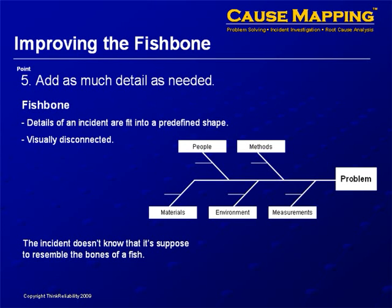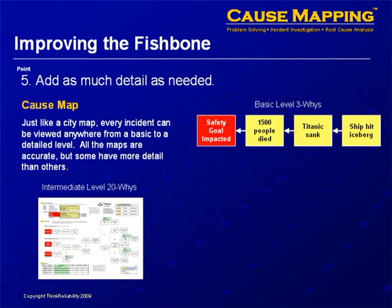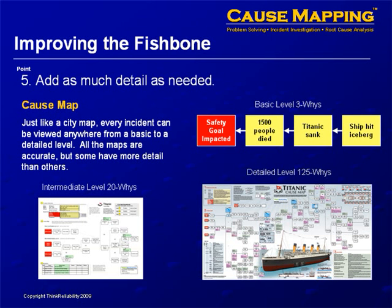The fifth item is how important it is to add detail. On the fishbone diagram, it's always this defined shape that looks like a fish. One of the advantages of laying things out visually in terms of cause and effect is that you can begin with just very basic why questions: the safety goal was impacted because 1,500 people died because the Titanic sank because the ship hit the iceberg. That is an accurate analysis — it's just not very thorough. A more detailed cause map available on our website has 20 cause and effect relationships for the Titanic sinking, and a further analysis has 125. It's just like looking at a map of your city, your state, or your country — all are accurate, just at different levels. All of these cause maps are accurate, just at different levels of detail.